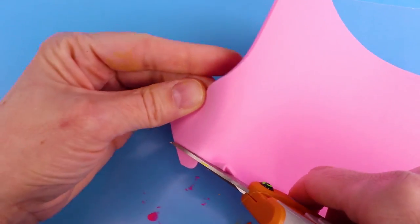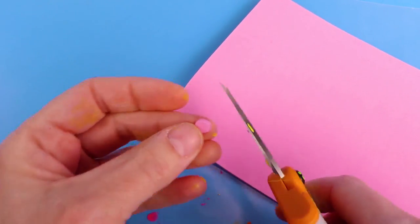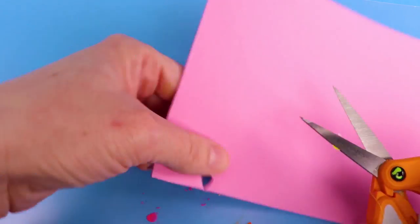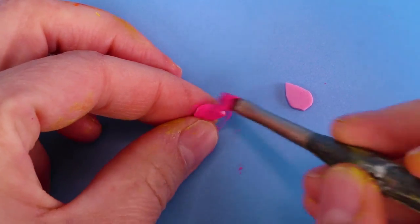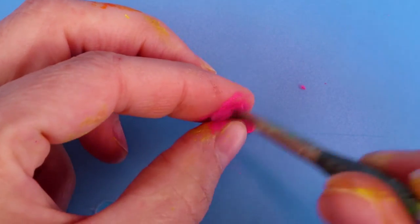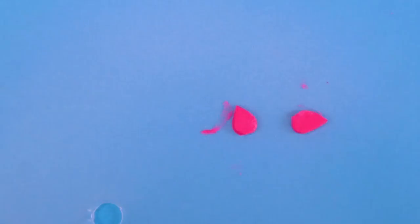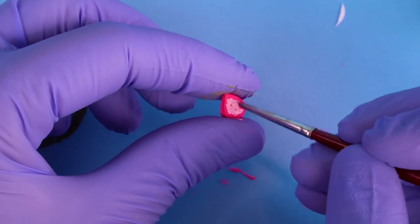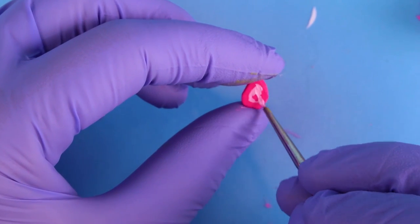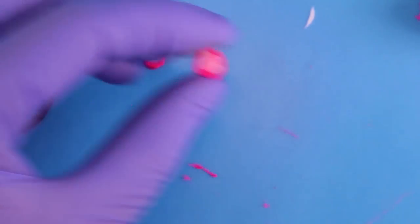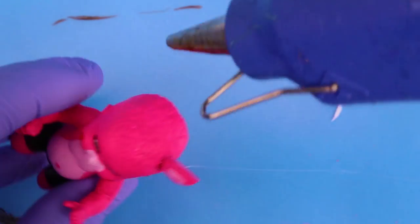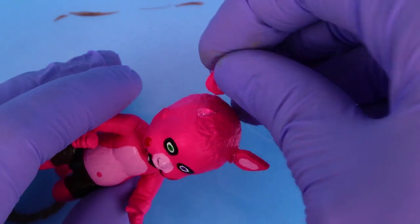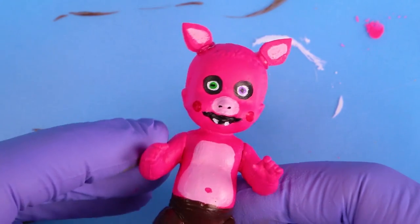Next I cut out some pink foam ears. Then I painted them Pig Patch Pink and then painted on little centers of the ears in light pink. When everything was dry I glued on the ears and he was complete.